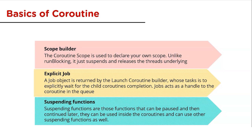Next is the explicit job. A Job object is returned by the launch coroutine builder, whose task is to explicitly wait for the child coroutine to complete. Jobs act as a handle to the coroutine in the queue — for every coroutine created, it returns a Job instance that uniquely identifies the coroutine and manages its lifecycle.